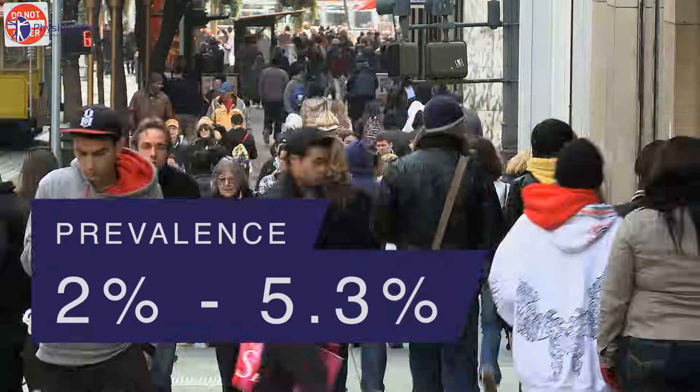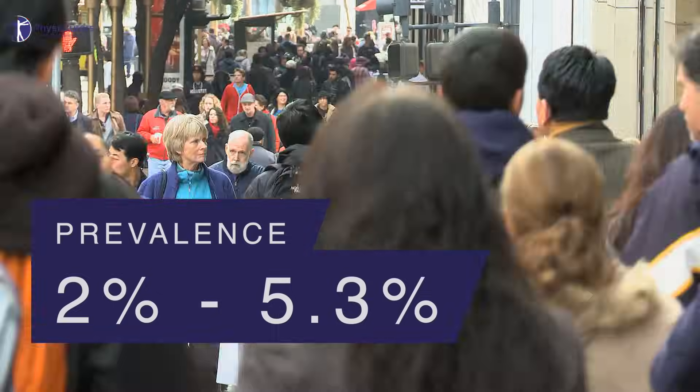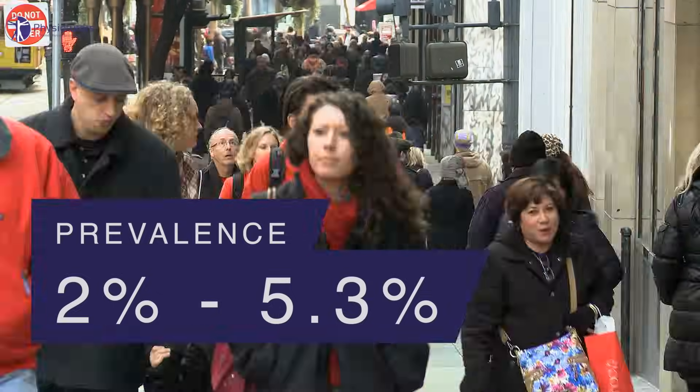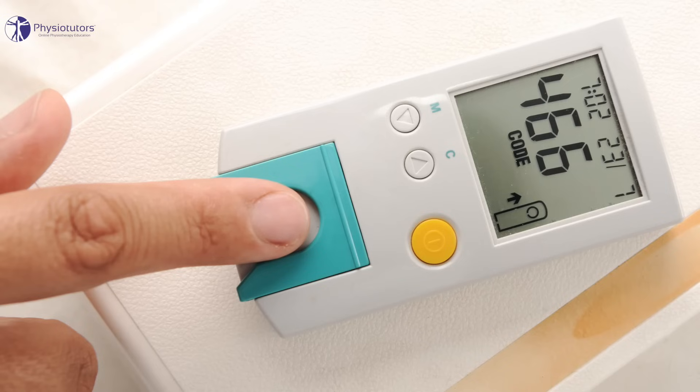Frozen shoulder has a prevalence of 2 to 5.3% in a general population, with a peak at 55 years of age and a higher prevalence amongst women, patients with diabetes and thyroid dysfunction, and those with a previous episode of frozen shoulder on the contralateral side.